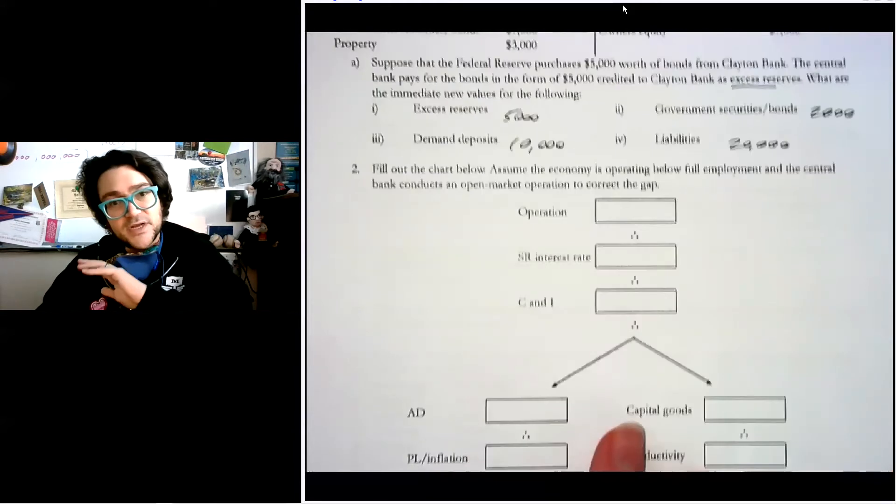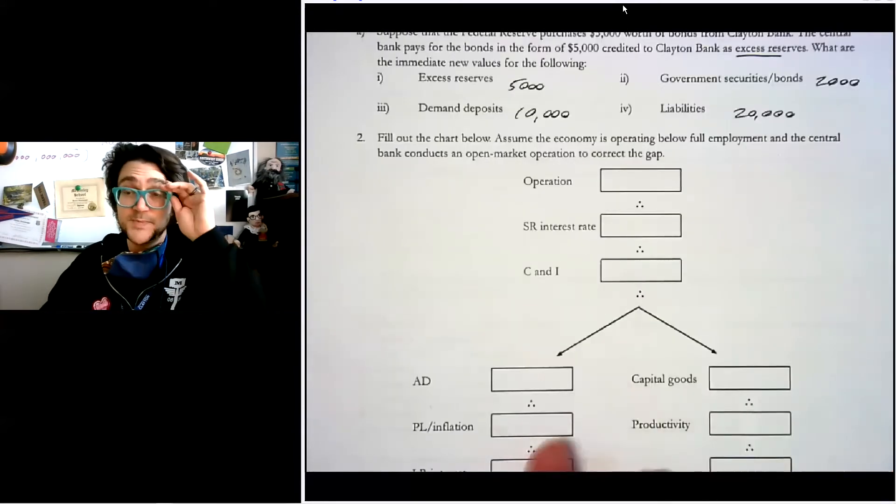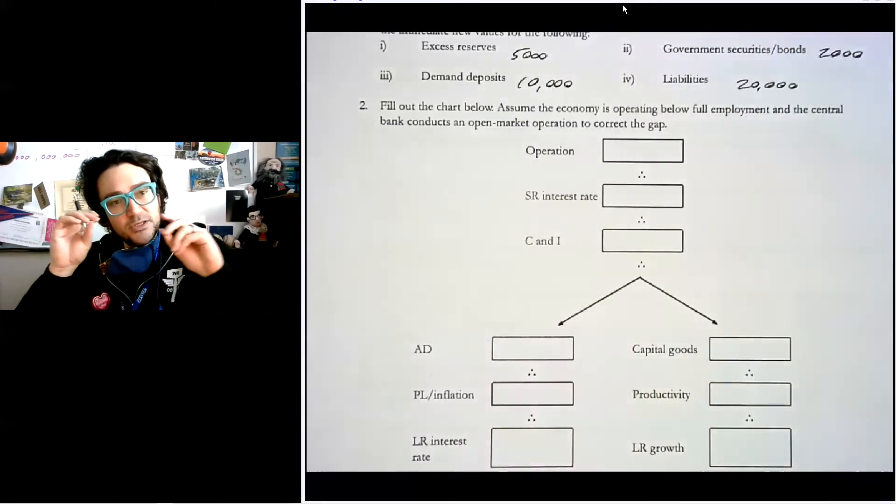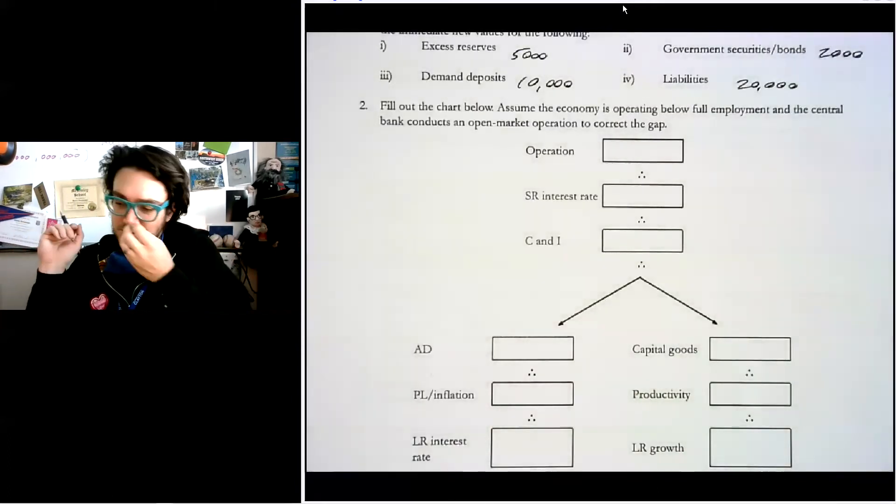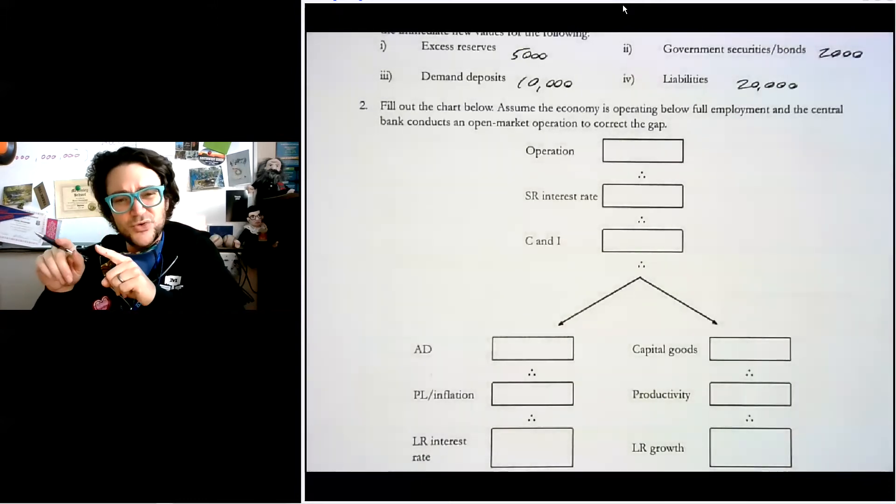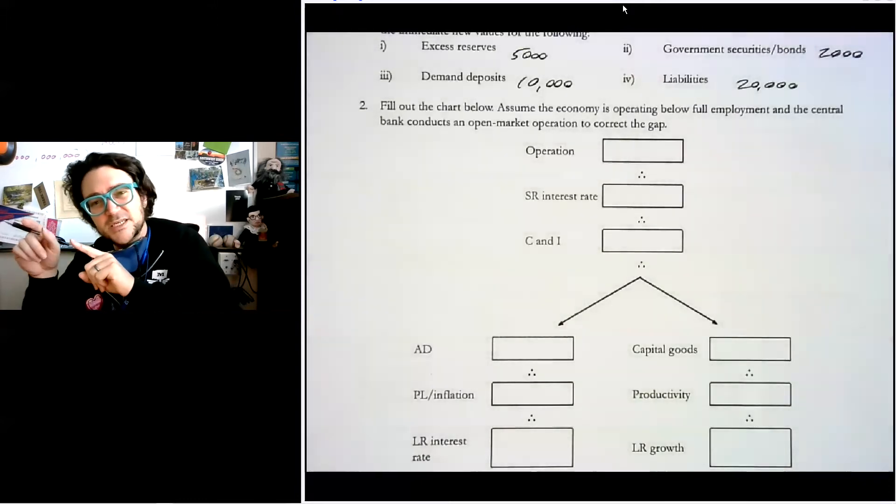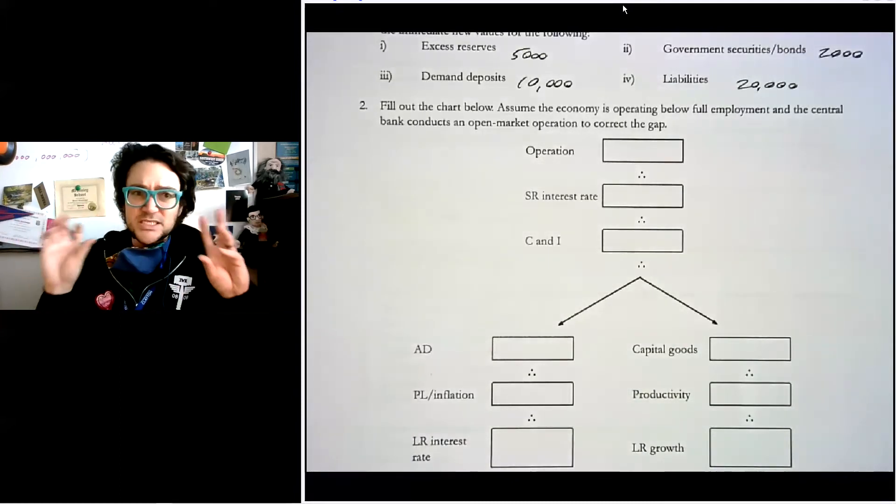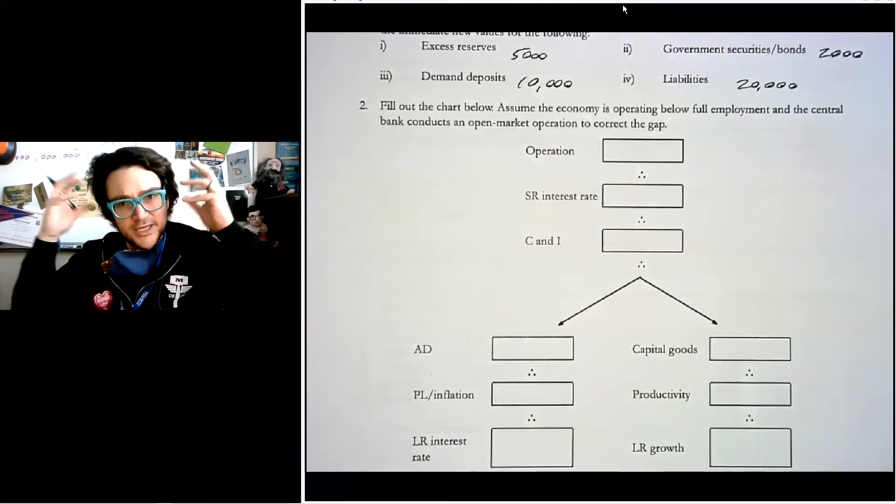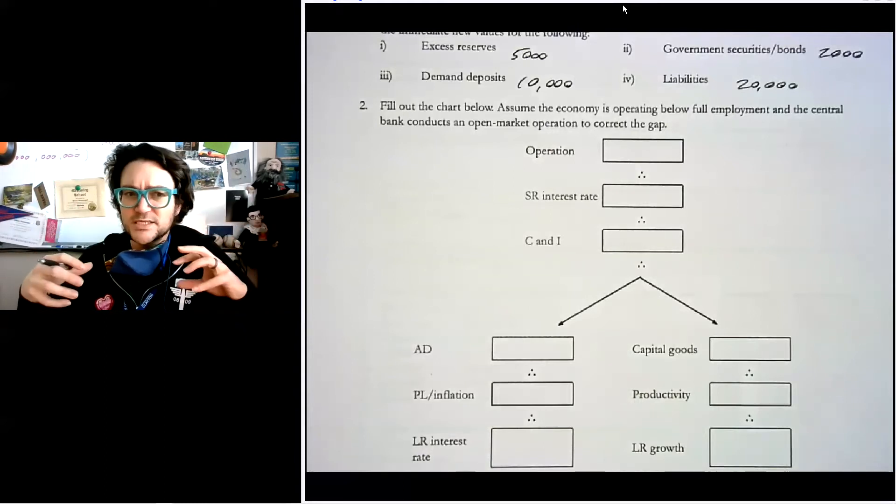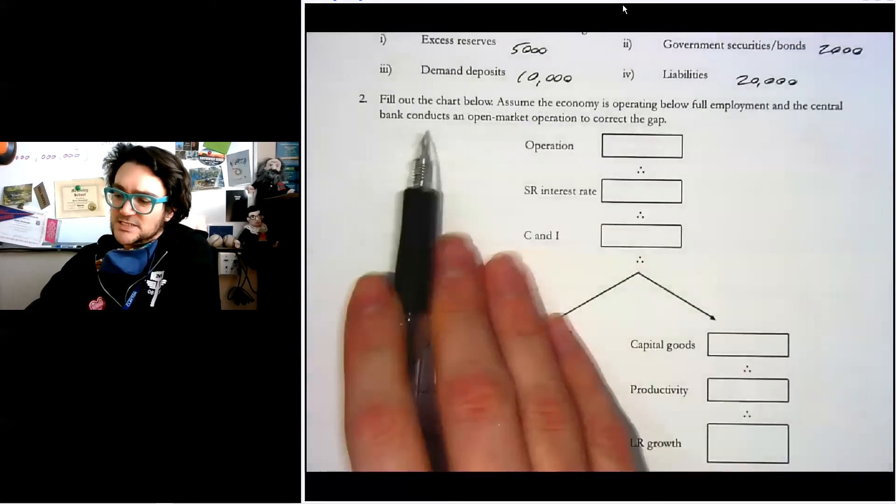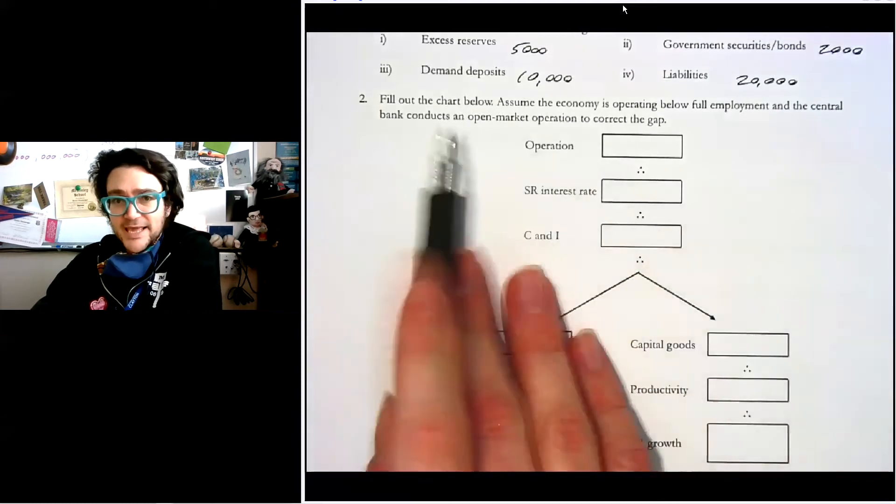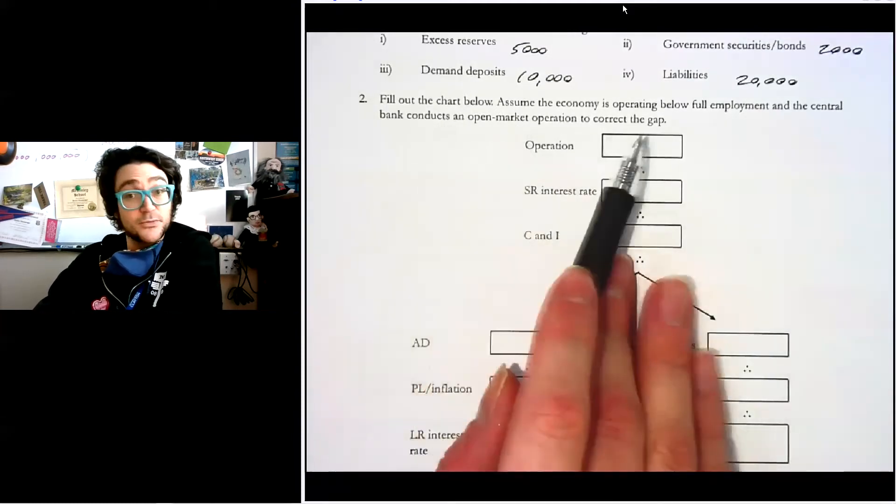Now let's take a look at a different kind of concept. We're going to come back and practice with balance sheets again, don't you worry. But this is more like explaining the little connection points. And I actually want to show you how basically the story that we told causes different outcomes. It can end up in two places. And this is going to get kind of weird, but it's actually kind of gets you to think about what can happen when the Fed does this stuff. So the first part says, fill out the chart below. Assume the economy is operating below full employment and the bank conducts an open market operation to correct the gap.